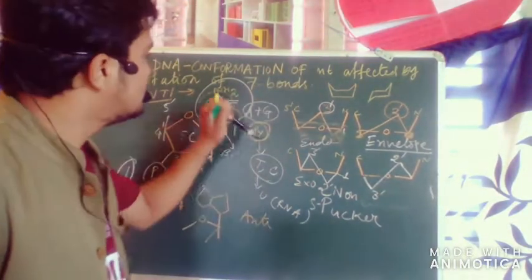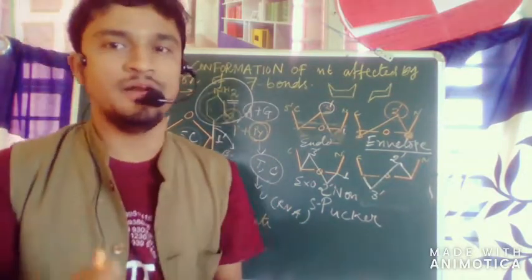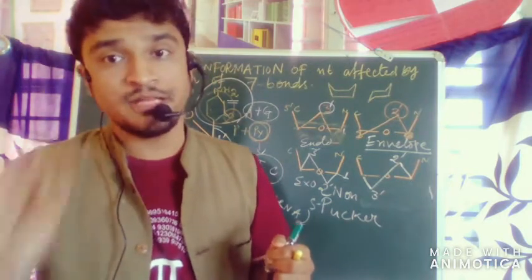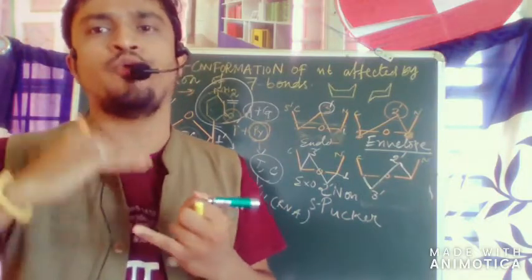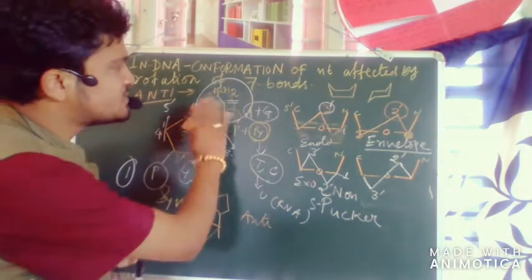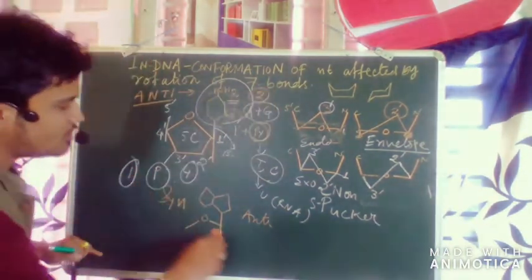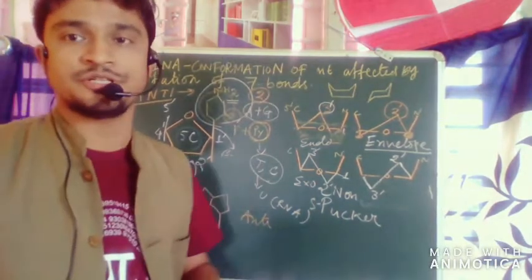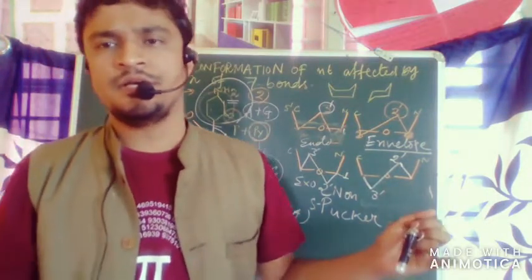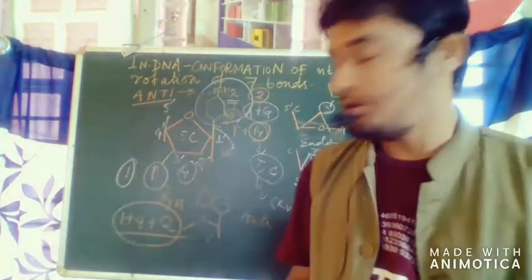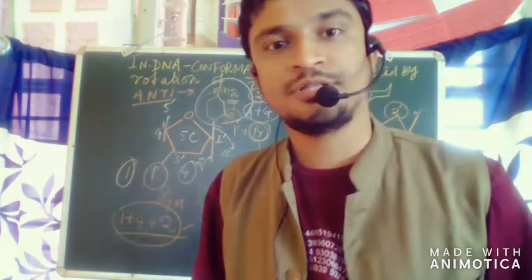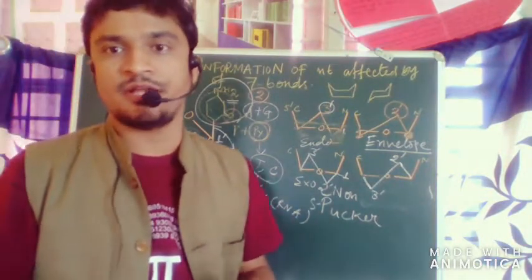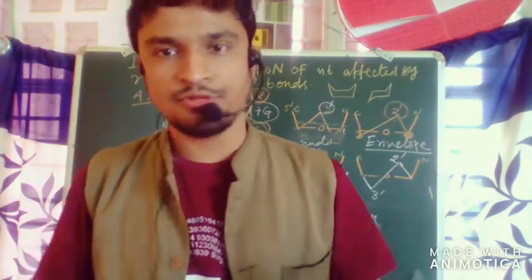Pyrimidines specifically prefer the anti configuration due to steric hindrance. All molecules seek stability and the least amount of repulsion — they want to gain thermal stability. Higher energy states are less stable, so to increase stability you reduce the energy state. The two possible rotations for the nitrogen base are anti and syn. Adding it all up: 1 (phosphate) + 4 (pentose sugar) + 2 (nitrogen base) = 7 possible rotations total in a DNA nucleotide. I hope this helps you understand sugar puckering. Thank you for listening, stay tuned.